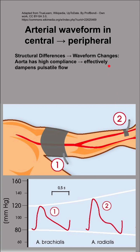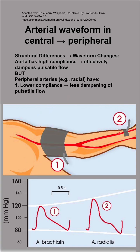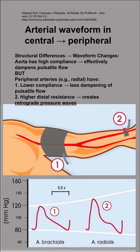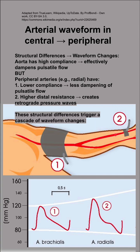For instance, the aorta has a very high compliance — it effectively dampens pulsatile flow. When you get to the periphery, like radial arteries, they tend to have lower compliance and less dampening of that pulsatile flow. They also have a higher distal resistance, which can create retrograde pressure waves. As the artery gets smaller in diameter, it's a smaller area for blood to flow through, and that higher distal resistance creates a retrograde, backward-facing pressure wave that bounces back on the oncoming blood.